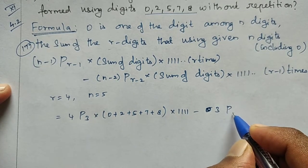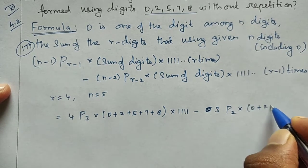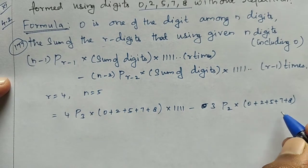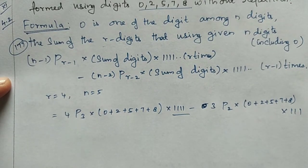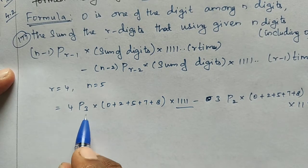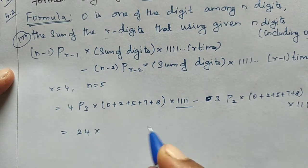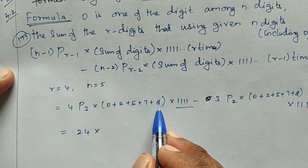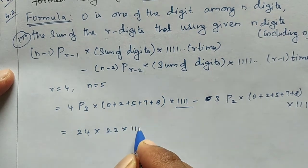Now, 4P3 is equal to 24. So the first term is 24 into 22, multiplied by 1111. We compute 24 × 22 = 528, so the first term is 528 × 1111.